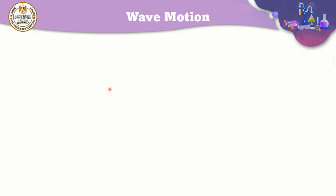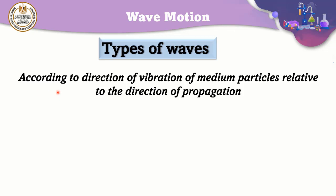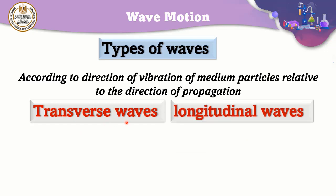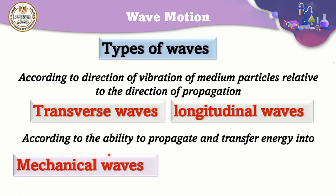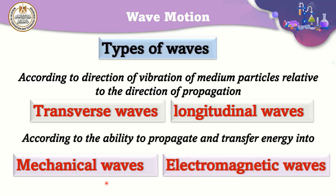Now we are going to classify the types of waves. Waves are classified, first, according to the direction of vibration of medium particles relative to the direction of propagation — we can classify waves into transverse waves and longitudinal waves. The second classification is according to the ability to propagate and transfer energy: mechanical waves that need a medium to travel through, like sound waves, and electromagnetic waves that don't need a medium to travel through.